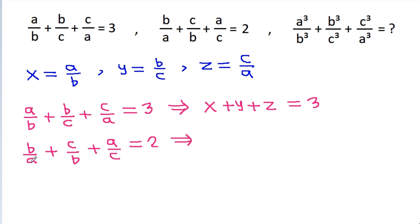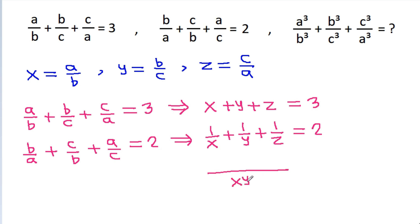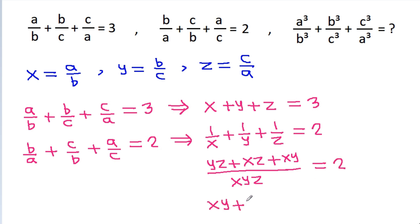So b/a becomes 1/x, plus c/b becomes 1/y, plus a/c becomes 1/z, and that is equal to 2. Taking the LCM, we get yz + xz + xy all over xyz equal to 2, so xy + yz + zx is equal to 2xyz.